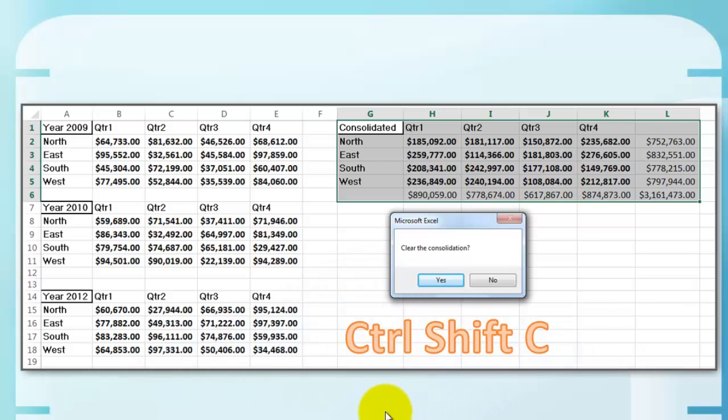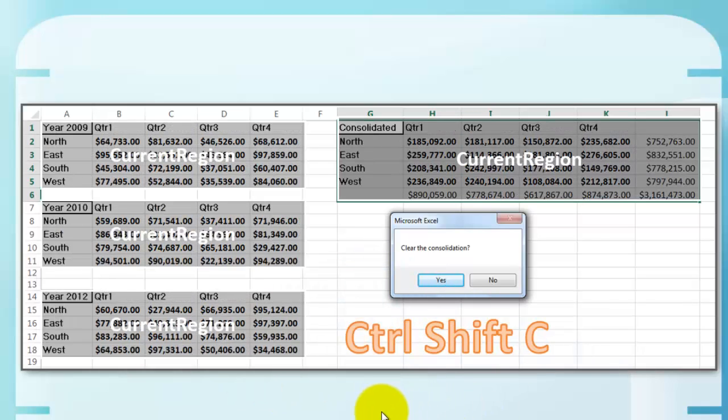How can we handle that situation? We need to know one more thing. Every section is separated from another one by empty rows or empty columns. We call such a unit the current region.